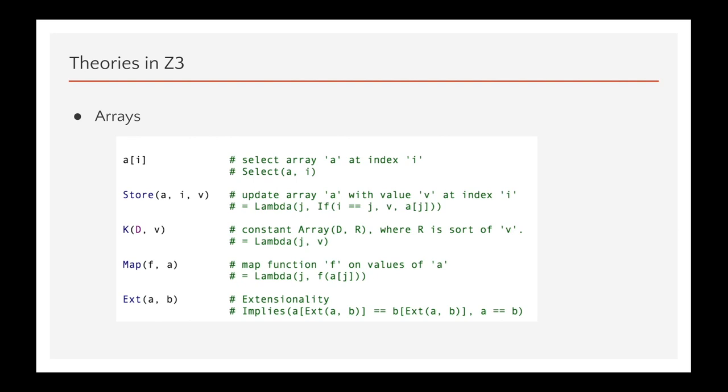Next are arrays. Z3 treats arrays as function spaces. So, a function can be converted to an array using lambda. These are a set of built-in functions that are available for arrays and these are the representations using lambda bindings.